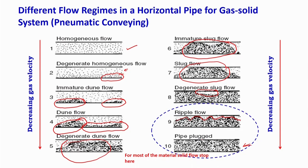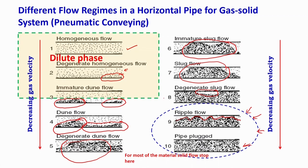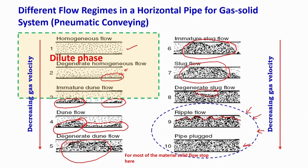In ripple flow and plug flow, solid movement is completely stopped and no transportation takes place — for most materials this is because the plug is so dense it is almost impossible to move anything inside. These are completely undesirable regimes. The box drawn on the diagram cuts at the immature dune flow and the top homogeneous parts — these are the dilute phase. The bottom part of the immature dune flow is the start of the dense phase. So dilute phase flow is the top portion, and everything below is dense phase flow.